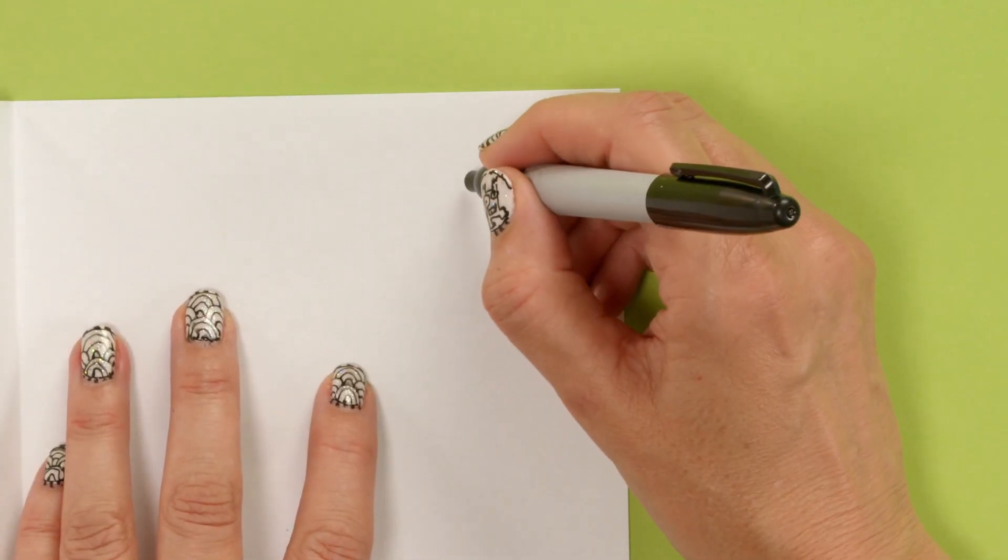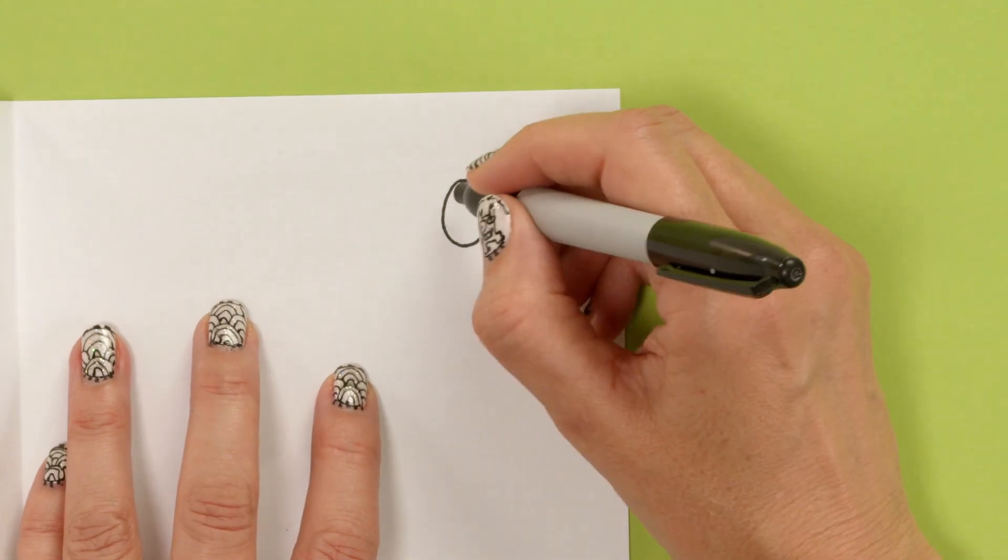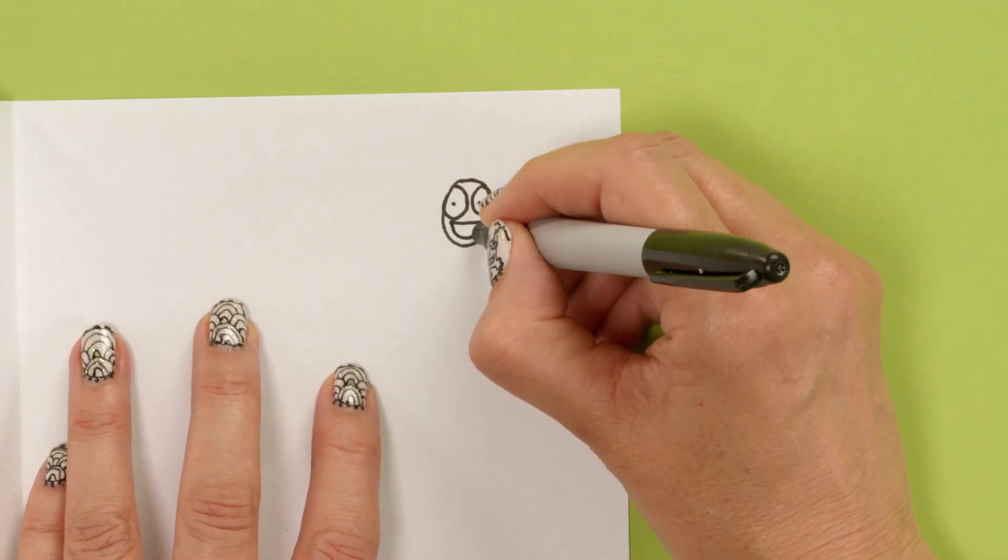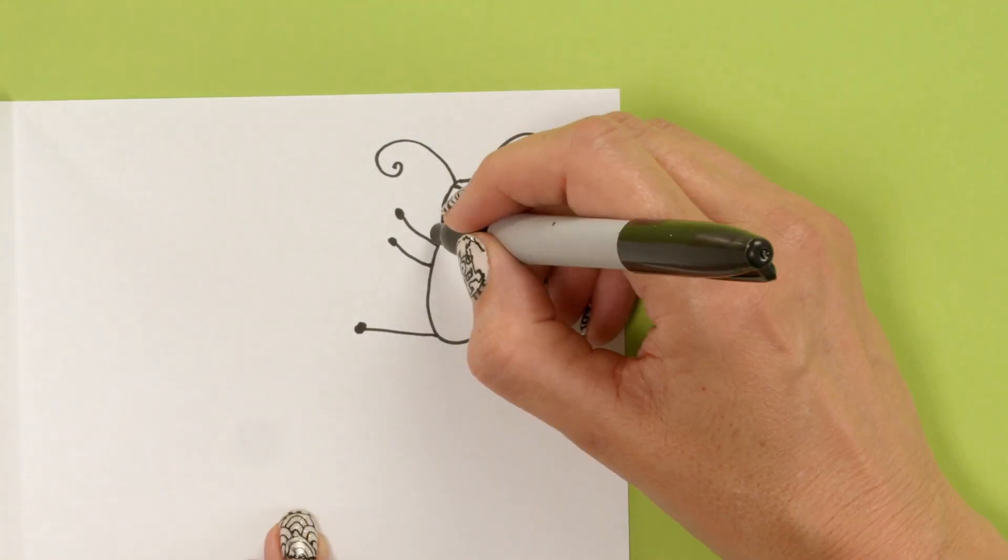Let's try a bug. So don't forget, draw at the top end of the paper, so that you can hold it and flick it. Put his arms up in the air, and his legs. Maybe give him some fur.